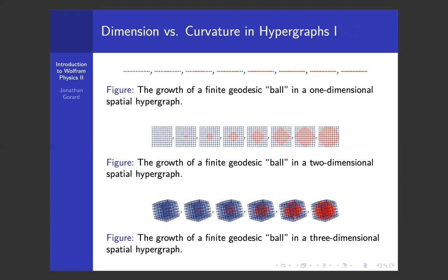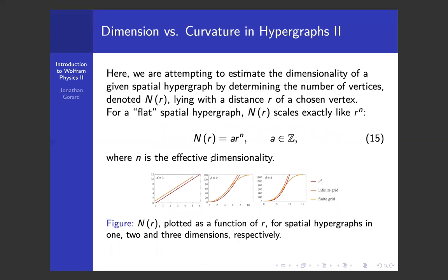Here's the geometrical picture for what's going on. If we take a point in the hypergraph, look at adjacent points, and grow out a finite geodesic ball, then for a flat grid-like hypergraph the volume of that ball grows like epsilon to the n, where n is the dimensionality of the space — roughly like pi*r^2 for a flat two-dimensional space, or four-thirds*pi*r^3 for a flat three-dimensional space, and so on. This gives us a way of determining the effective dimensionality of a hypergraph by looking at how the number of hyperedges reachable at metric distance r scales with r. For a perfectly flat spatial hypergraph, it scales exactly like r^n, where n is the dimensionality.